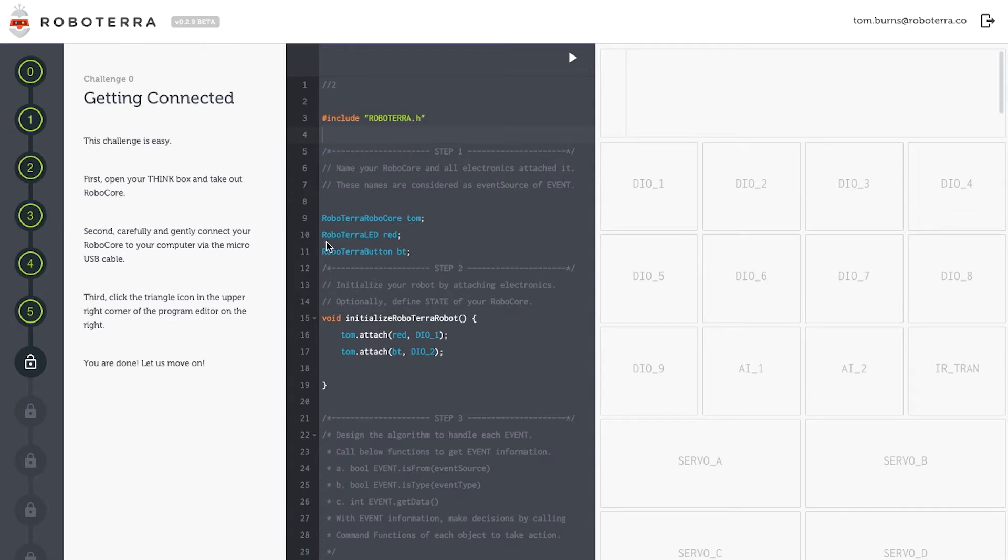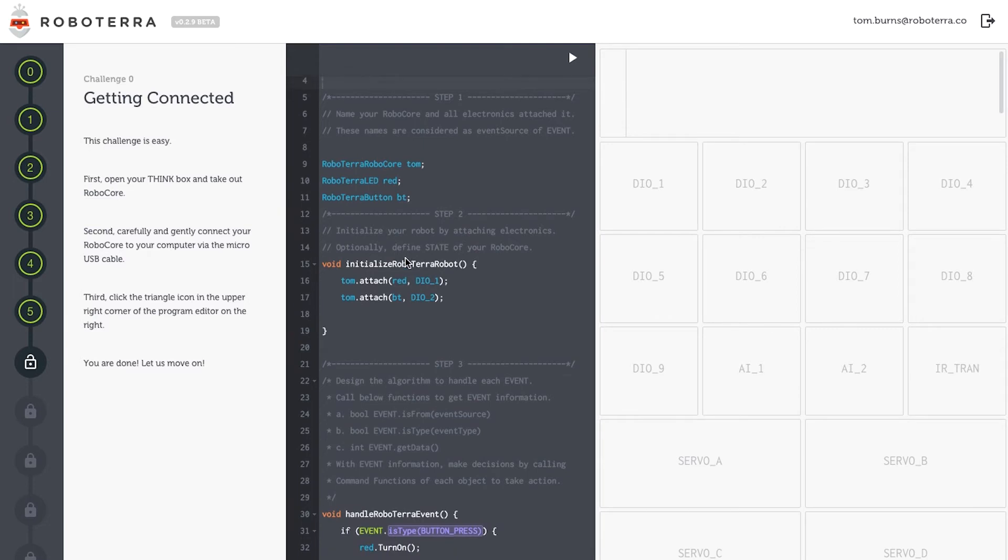Second, I've got to list my electronics. Using the class name RoboTerra LED, I'll name my LED red. And using the class name RoboTerra Button, I'm going to name my button BT. Next,